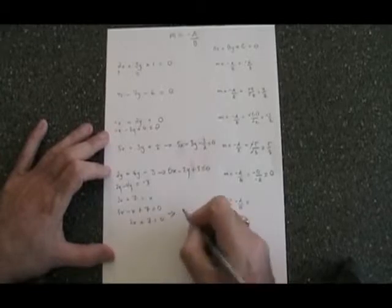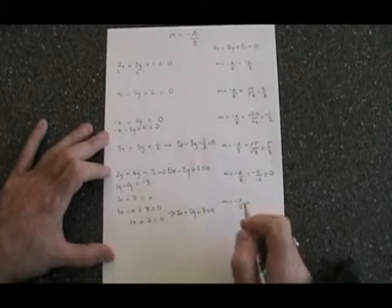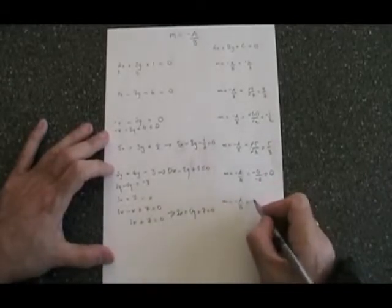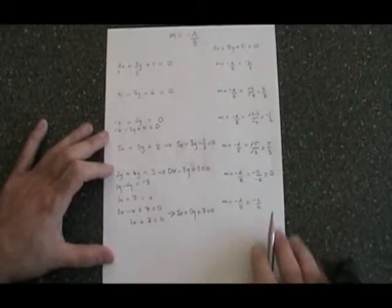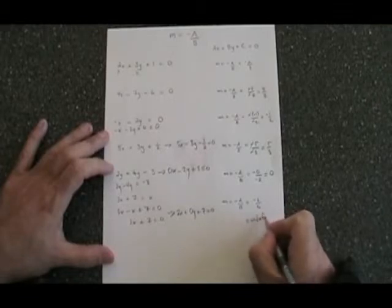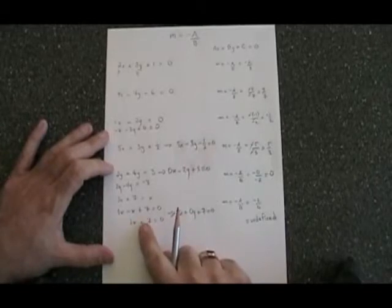This can be rewritten, if we wish, two x plus zero y plus seven equals zero. And when we do our negative a over b formula, we end up with negative two over zero. But of course, we cannot divide by zero, so this is an undefined slope. This is what will always happen when you have an equation with no y's in it.